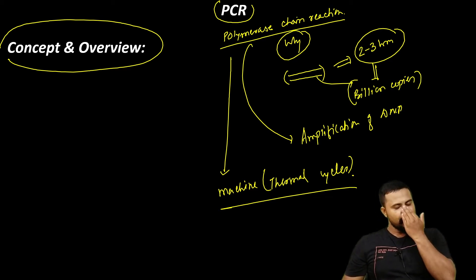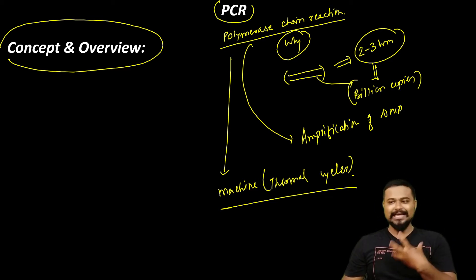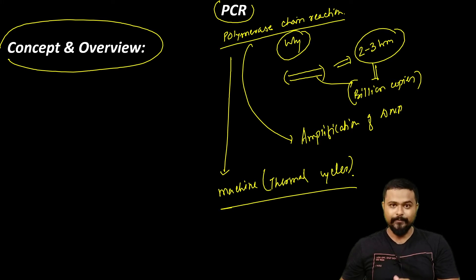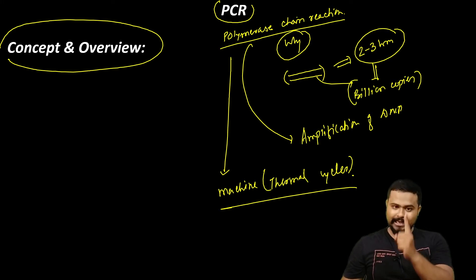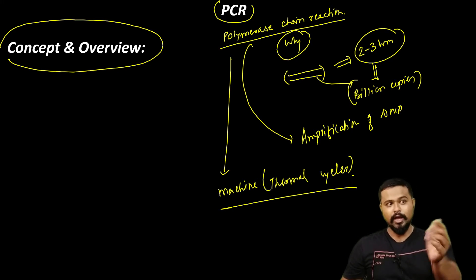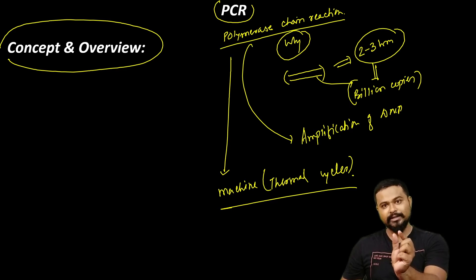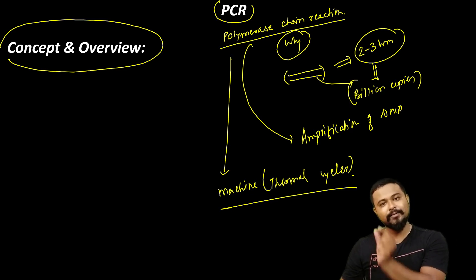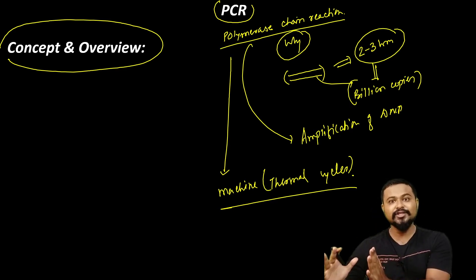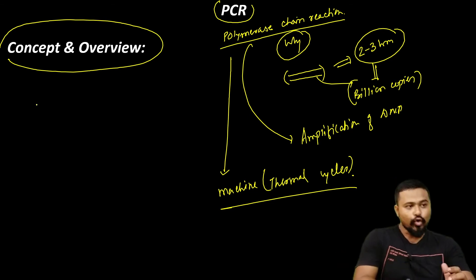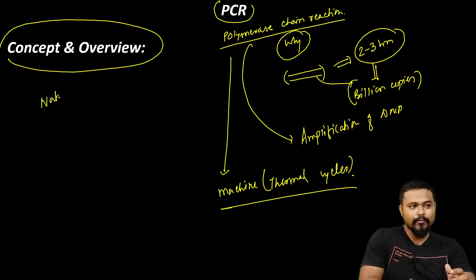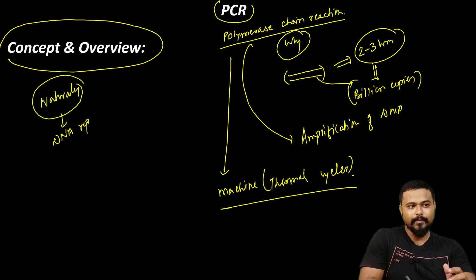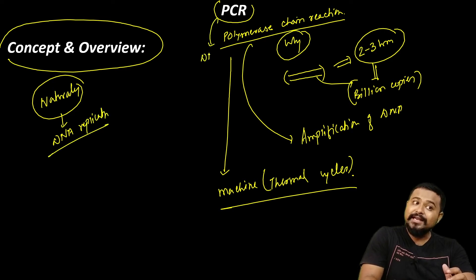Normally we have DNA replication. DNA replication means that DNA is replicated. PCR is done with DNA — it is a type of DNA replication. PCR is a type of DNA replication only.